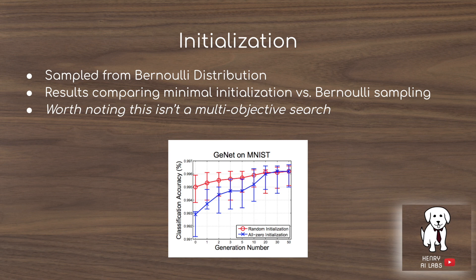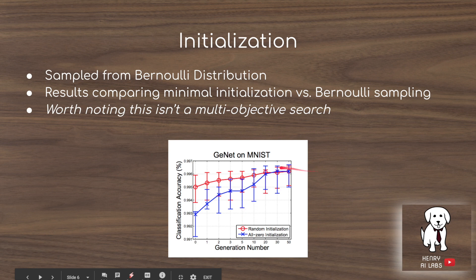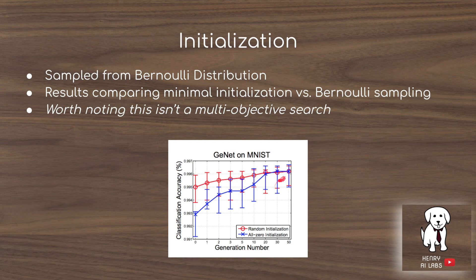In this algorithm, initialization is sampled from a Bernoulli distribution, comparing minimal initialization versus Bernoulli sampling. The NEAT algorithm argues for minimal initialization to prevent networks from becoming too complex, since a network with more complexity would theoretically never reduce its complexity if accuracy is the only metric. The paper shows that across many iterations, random and minimal initialization tend to saturate and align with each other, although this comparison is not a multi-objective search and networks are not penalized for additional complexity.